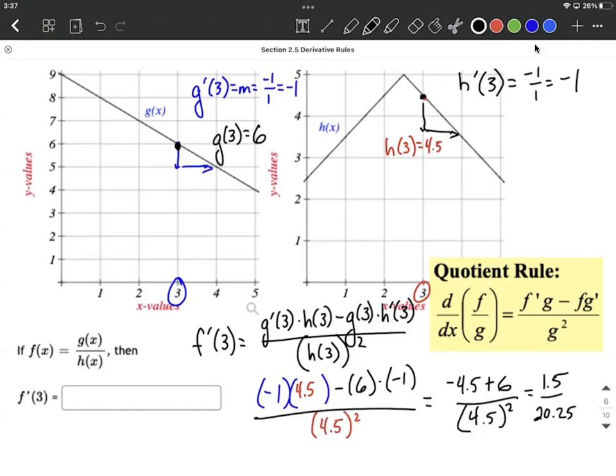So 1.5 divided by 20.25 is not going to be nice. I guess if we multiply numerator and denominator each by 100, we could get rid of our decimals. Or if you just put this in your calculator, it would be approximately 0.074.